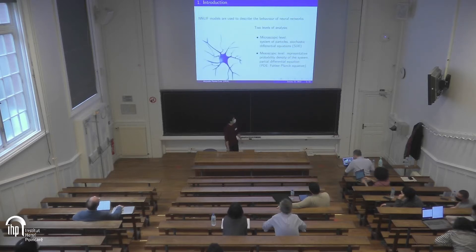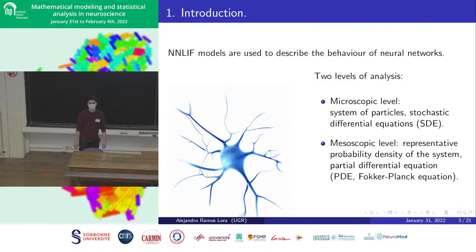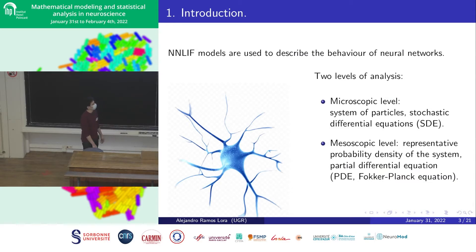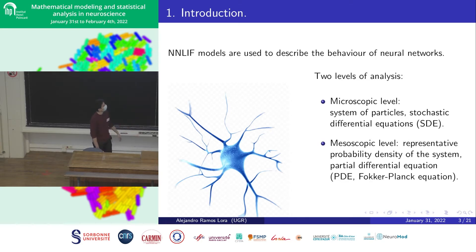These nonlinear noisy leaky integrate-and-fire neural models, also known as NNLIF, are used to describe the behavior of neural networks. There are two levels of analysis used to describe this model: the mesoscopic level, in which we consider every single neuron through a system of stochastic differential equations, and also the macroscopic level, in which we describe the whole system by a representative probability density, which is an average describing the behavior of the system.